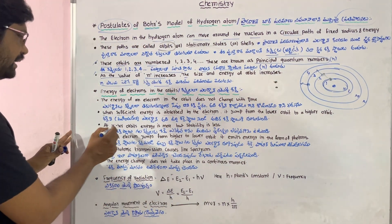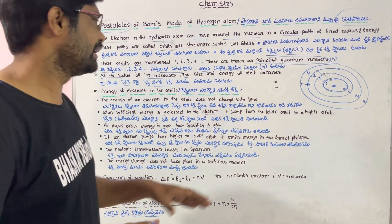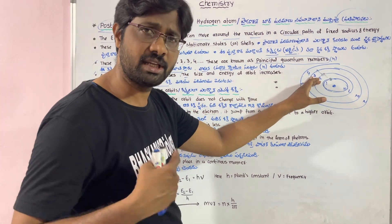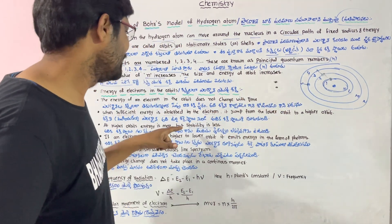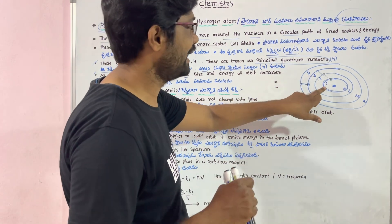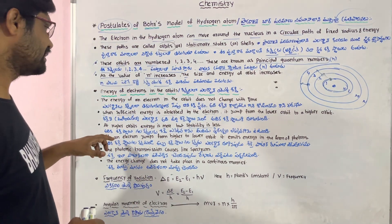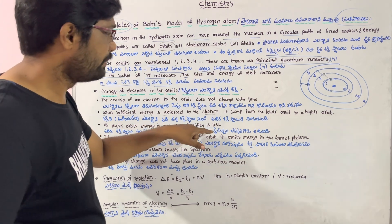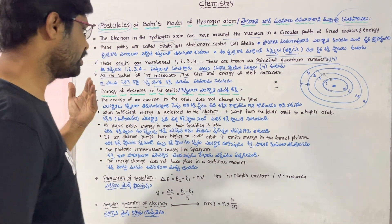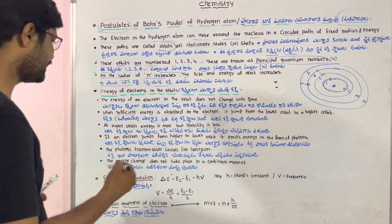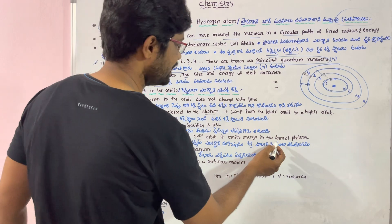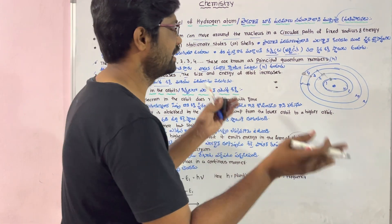In the higher orbit, energy is more and stability is less. This is a most important point. For example, the first orbit has the lowest energy and highest stability, while the fourth orbit has the highest energy and lowest stability.